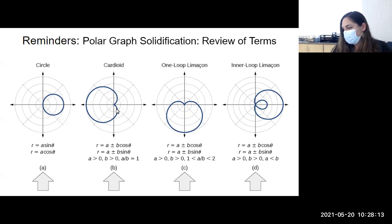For a cardioid, you have R equals A plus or minus B cosine theta, or R equals A plus or minus B sine theta. And A and B basically have to be, their absolute value has to be the same. This says A over B equals one, but that just means the same thing. Anything divided by itself is one. So A and B must match in order for your shape to be a cardioid.